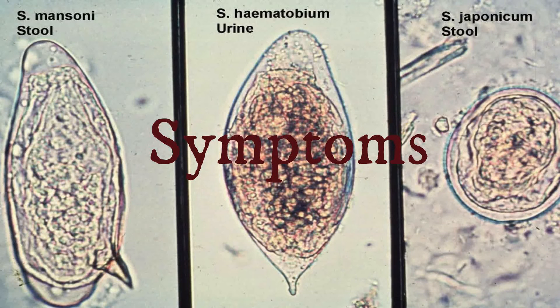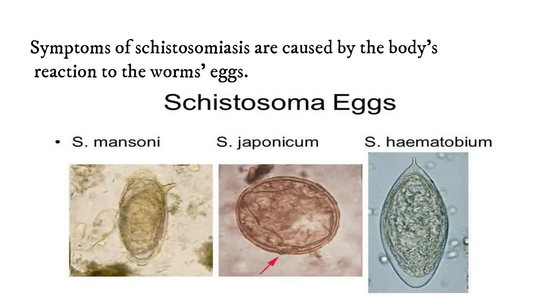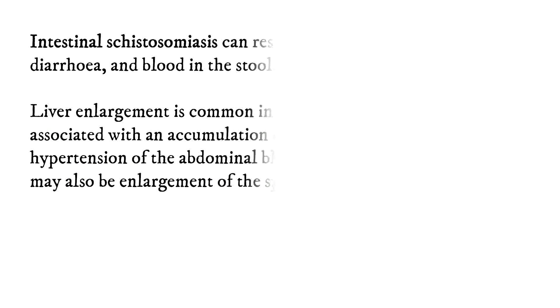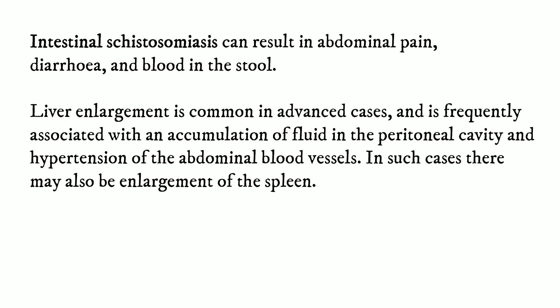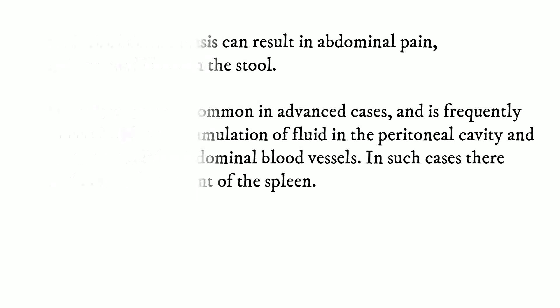Moving on to the symptoms. Symptoms of schistosomiasis are caused by the body's reaction to the worm's eggs. Intestinal schistosomiasis can result in abdominal pain, diarrhea, and blood in the stool. Liver enlargement is common in advanced cases and is frequently associated with an accumulation of fluid in the peritoneal cavity and hypertension of the abdominal blood vessels. In such cases, there may also be enlargement of the spleen.